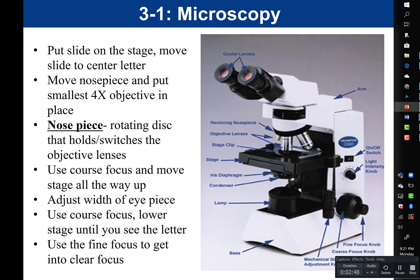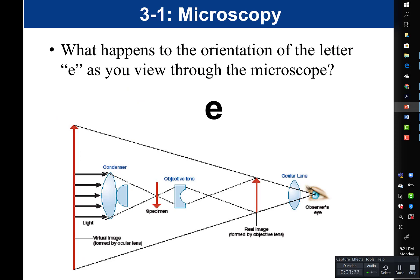You should understand the basic steps of how to use the microscope and know what things you need to do. Note that the nosepiece is the rotating disc that holds and switches the objective lens — that is a term and function you want to be familiar with. You also want to understand what happens to the orientation of the letter E as you view it through the microscope: the E appears upside down and backwards because of the two lenses — the objective lens and the ocular lens.